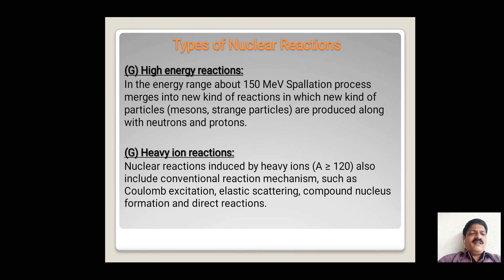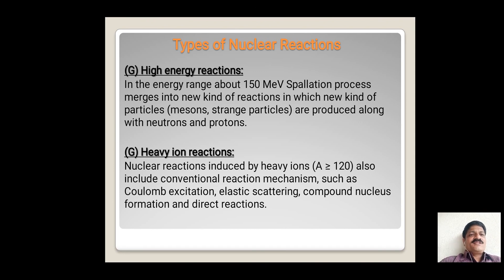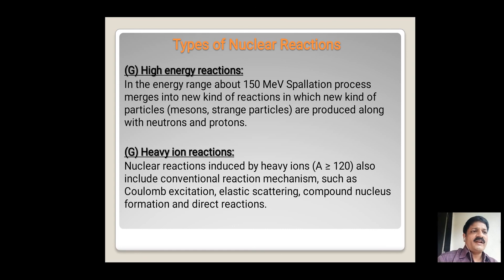The last type of nuclear reaction is heavy ion reactions — nuclear reactions induced by heavy ions, where the mass number is always greater than or equal to 120. These also include conventional reaction mechanisms such as Coulomb excitation, elastic scattering, compound nucleus formation, and direct reactions, all of which are included in heavy ion reactions.